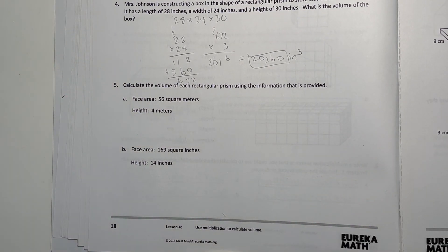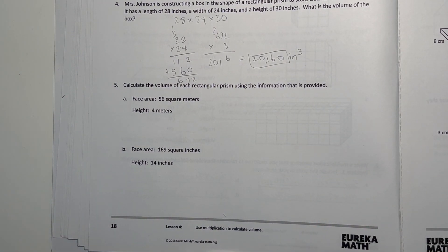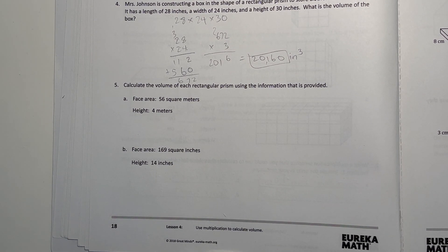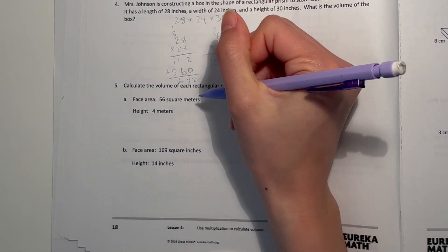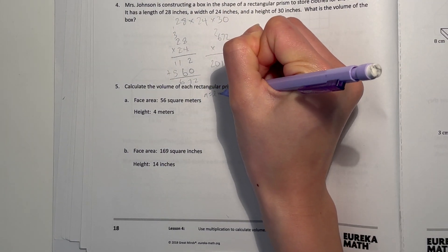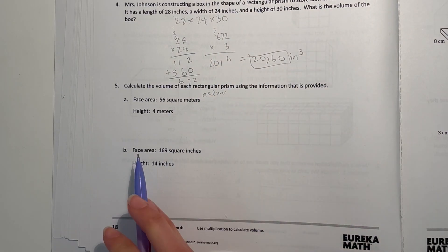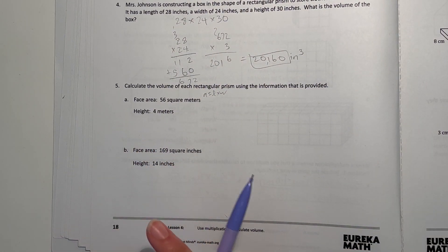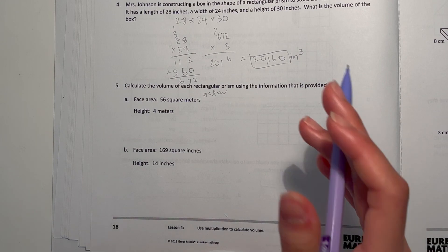Number five: calculate the volume of each rectangular prism using the information that's provided. So face area 56—well face area is just the area and that's length times width, because area is length times width. So they've already done that for us, so all you need to do is multiply the area by the height to find volume.